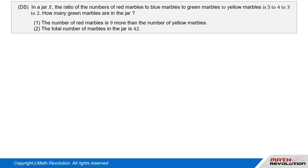Question 5. Data Sufficiency. In a jar X, the ratio of the numbers of red marbles to blue marbles to green marbles to yellow marbles is 5 to 4 to 3 to 2. How many green marbles are in the jar? Condition 1: The number of red marbles is 9 more than the number of yellow marbles. Condition 2: The total number of marbles in the jar is 42.